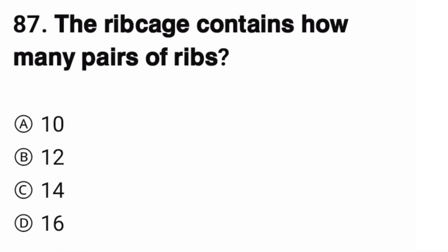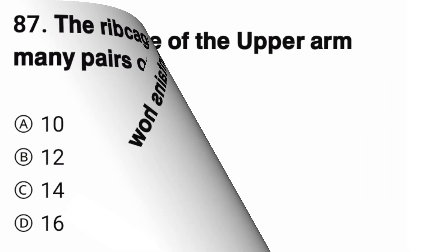Question number 87. The rib cage contains how many pairs of ribs? The correct option is B.